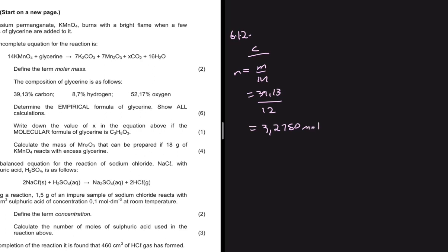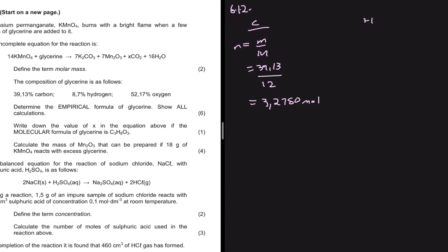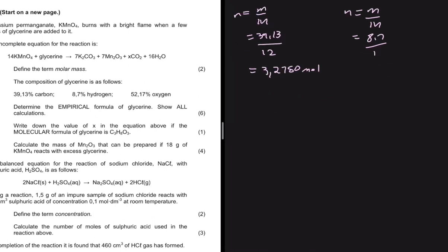For hydrogen, the number of moles equals mass divided by molar mass: 8.7 divided by 1, which equals 8.7 moles. For oxygen, the number of moles equals mass divided by molar mass: 52.17 divided by 16, which gives us 3.26 moles.